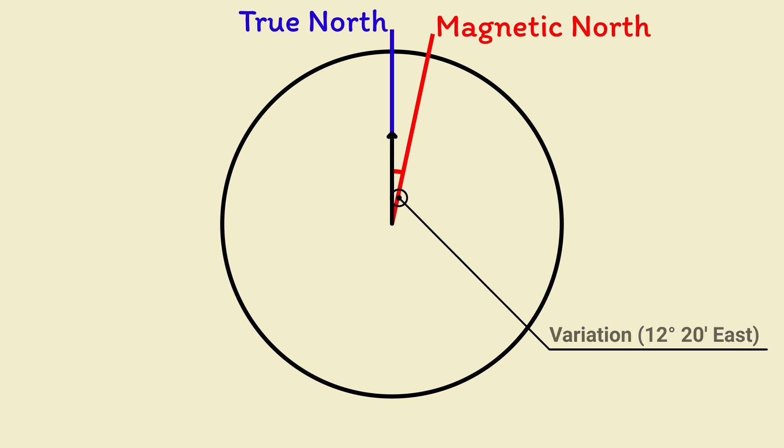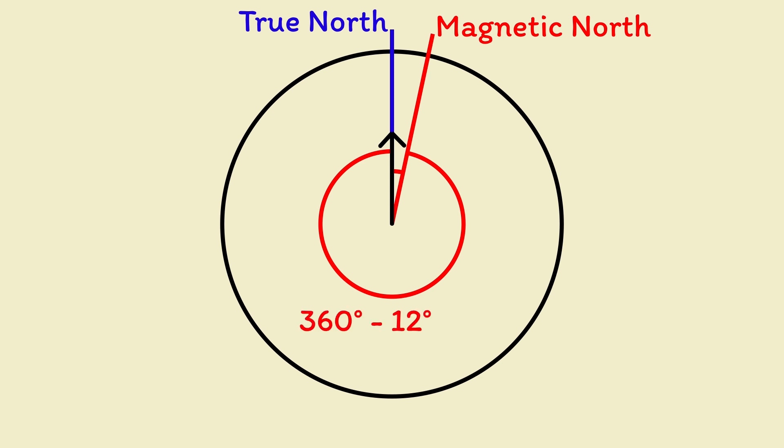Our course is 000 degrees true, so you can think of that as 000 or 360 if you've gone all the way around. To find our magnetic course, we want to measure our course from the magnetic north pole instead. It becomes this distance around here. Mathematically, you subtract the variation from the true course, which becomes 348 degrees if we round it to the nearest degree.